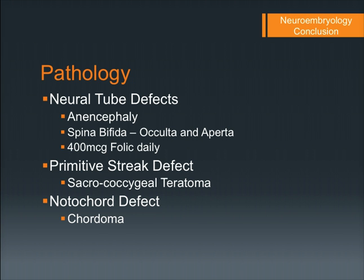It's really important to reinforce that 400 micrograms of folic acid every day should be given to every pregnant woman — it can reduce the incidence of neural tube defects by up to 70%. Primitive streak defects give rise to sacrococcygeal teratomas, which contain all germ layers and can be as big or even bigger than the foetus itself. Notochord defects, the most rare, give rise to chordomas found at the cephalic or caudal end of the spine.